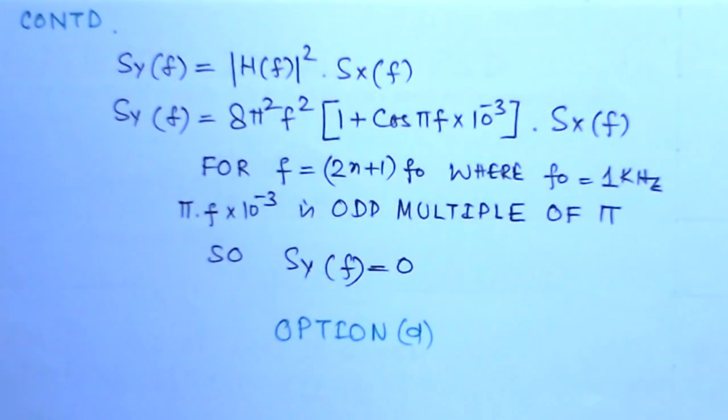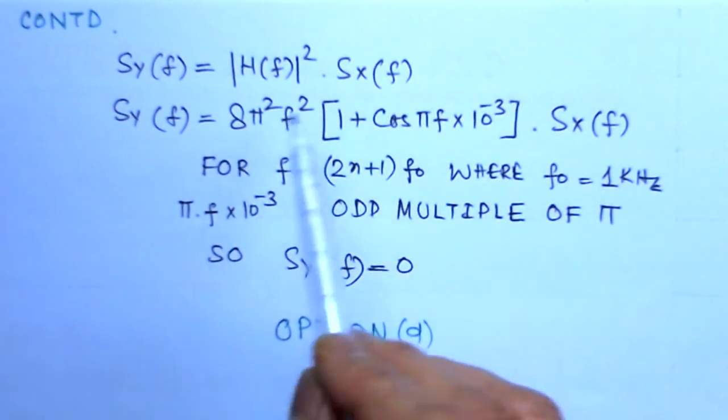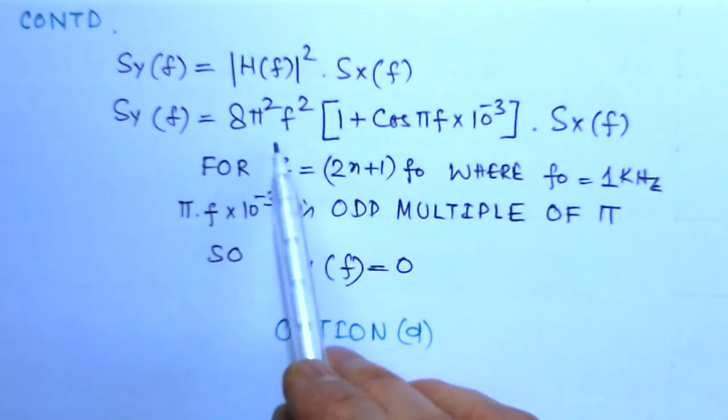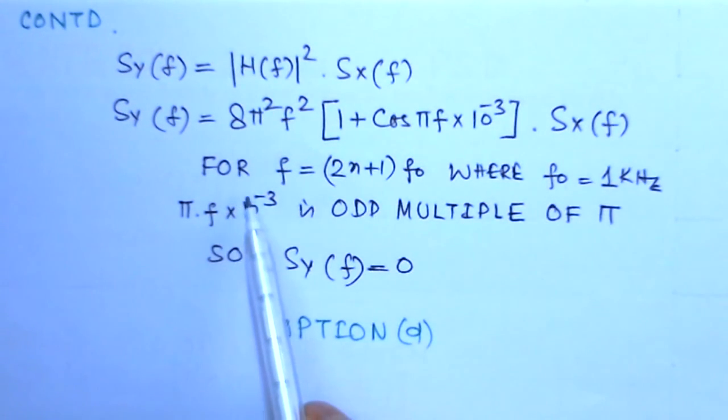The solution continues. We know SY(f) is |H(f)|^2 times SX(f), then SY(f) equals |H(f)|^2 which we already found, times SX(f) which is given.